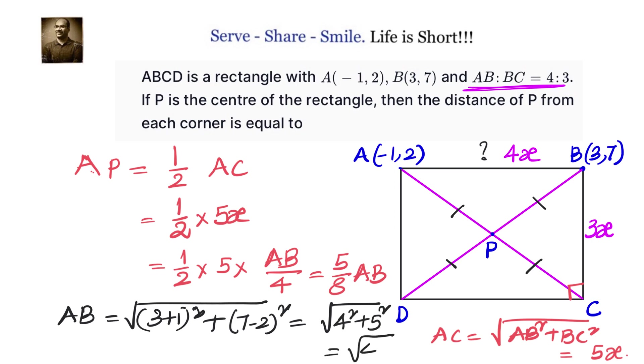Once we know AB equals to square root of 41, immediately we know the answer we are looking for is 5 by 8 into square root of 41, because AP is 5 by 8 times of AB. That is 5 by 8 square root of 41.